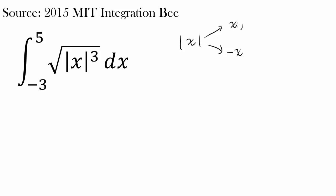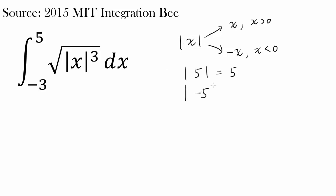Absolute value of x equals x when x is greater than 0, and absolute value of x equals negative x when x is less than 0. For example, the absolute value of 5 is 5 — that's the same as x itself. But the absolute value of negative 5 requires multiplying by negative 1: you do negative x to get positive 5. So absolute value of x is x when x > 0 and negative x when x < 0.